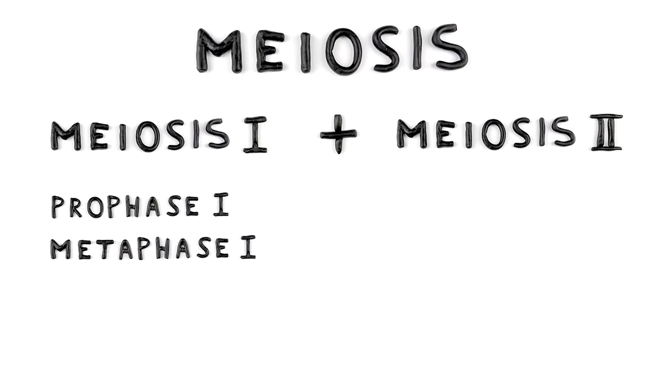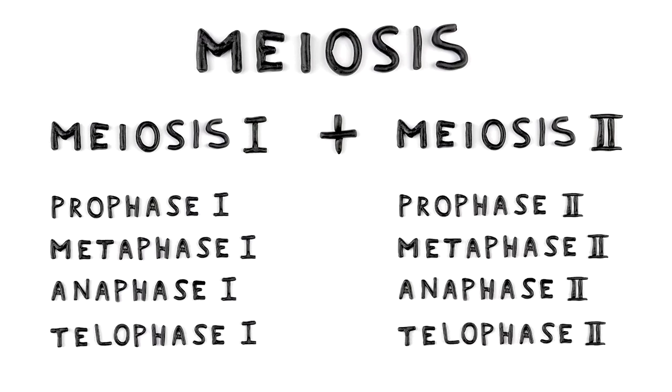Meiosis involves two cycles of cell division, called meiosis I and meiosis II. Each cycle involves the same four stages as mitosis, PMAT, with some important differences.